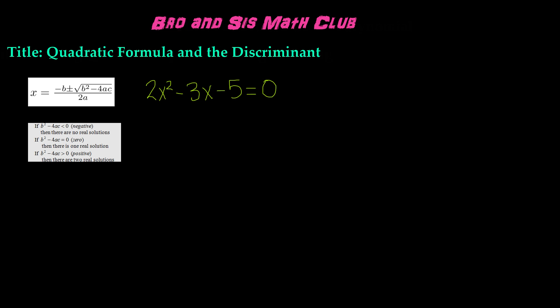The discriminant is part of the quadratic formula. It's the terms that are underneath the radical, which is b squared minus 4ac. When you plug in the values of a, b, and c from a quadratic equation into the quadratic formula, you can solve for the variable. But when you're solving for the discriminant, you're trying to find how many solutions that quadratic equation has.